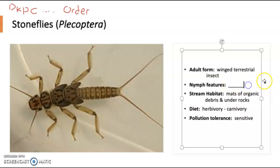So how do we identify stoneflies? We'll talk about the key features of the nymph — the form we're looking at is the stonefly in its aquatic environment. You need to be able to recognize this body plan and say, based on these key features, that this is a stonefly. We're not worried about which family, genus, or species — just the general group. We'll get into those key identification features in the next part of the lecture.